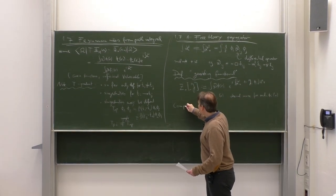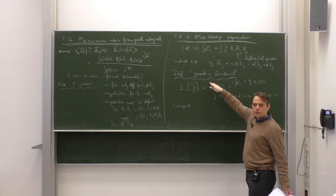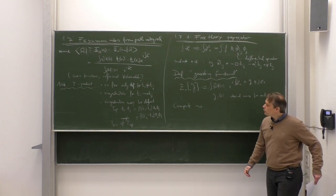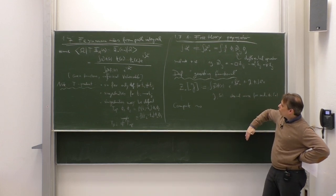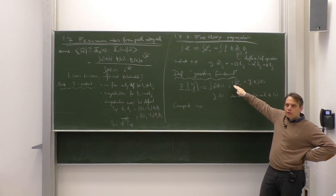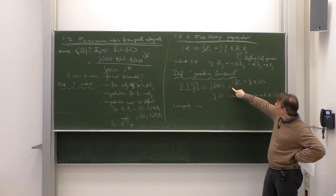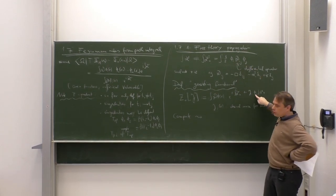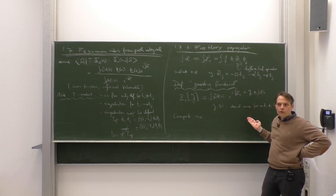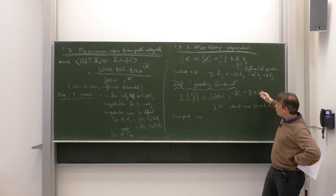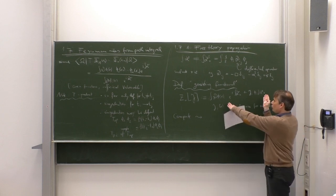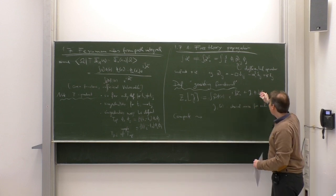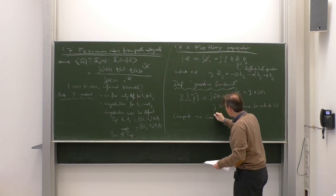In the free theory it is possible to directly compute the generating functional exactly. The integrand is a Gaussian integral — we have an exponential where the exponent is quadratic plus linear in the fields. The result of the Gaussian integral is a normalization factor times the integrand evaluated at the stationary point. We need the extremum of the exponent: one-half phi_i D_{ij} phi_j plus phi_i J_i.